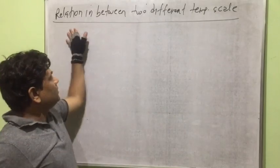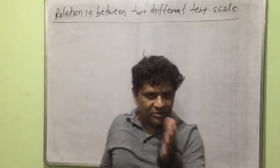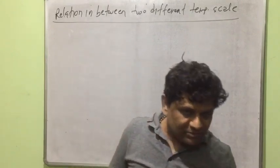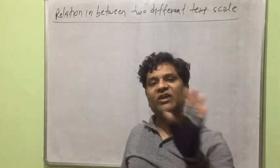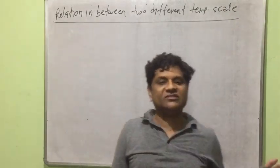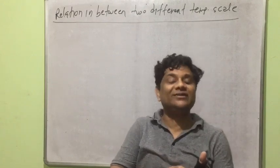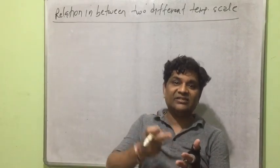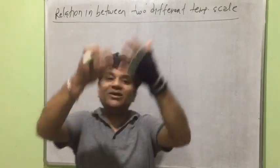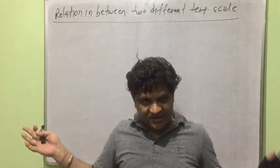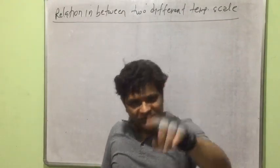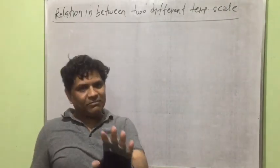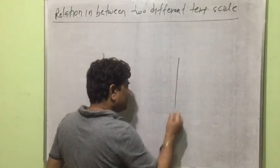The next topic is the relation between two different temperature scales — centigrade and Fahrenheit, Fahrenheit and Kelvin, Kelvin and Réaumur, centigrade and Réaumur. Rather than memorizing individual relations, we will develop one master formula in class so that we can find the relation between any two scales.